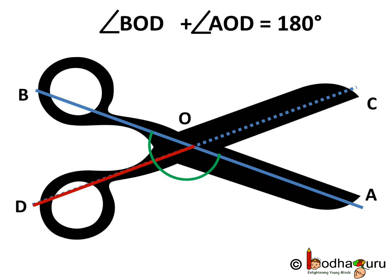Same way, the sum of angle BOD plus angle AOD is also equal to 180 degrees as OD stands on line AB and these two angles form a linear pair.